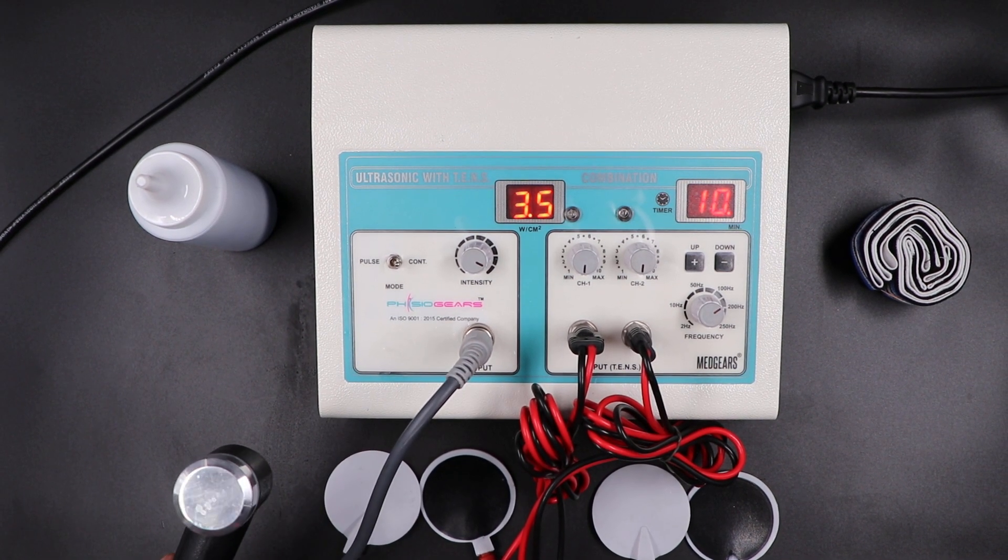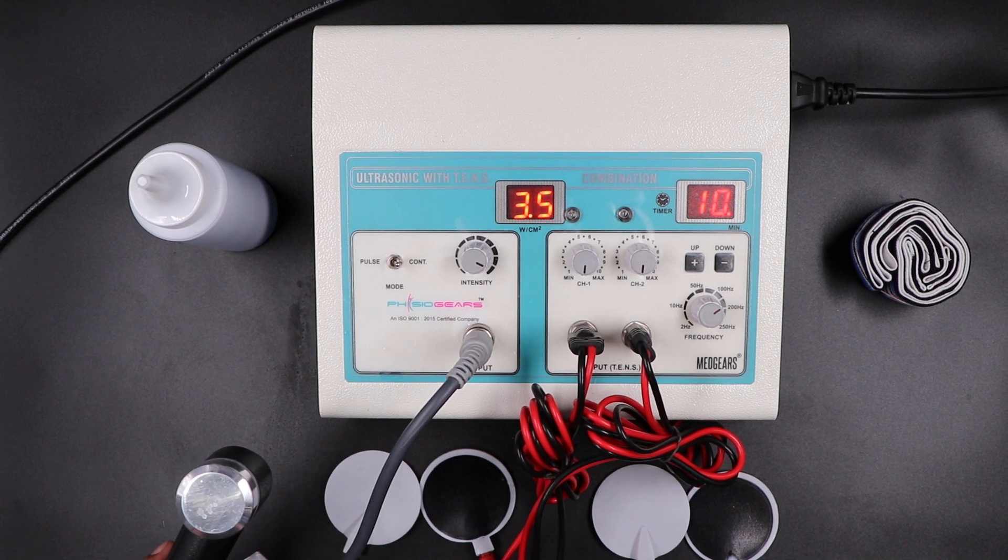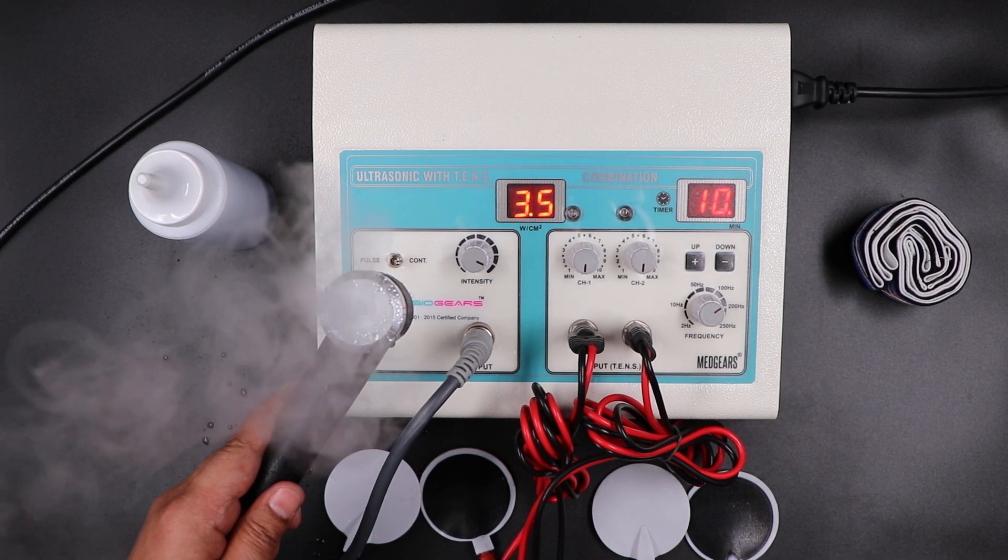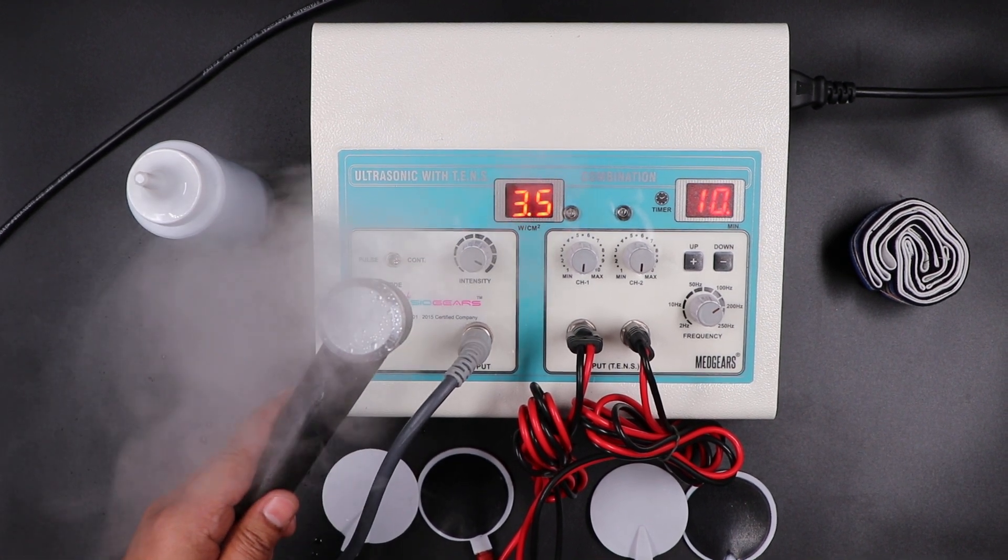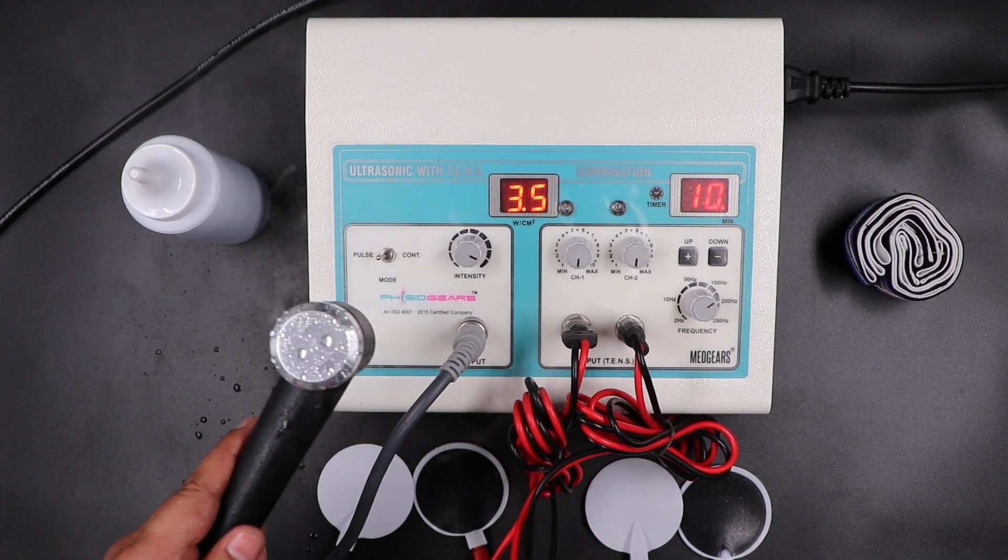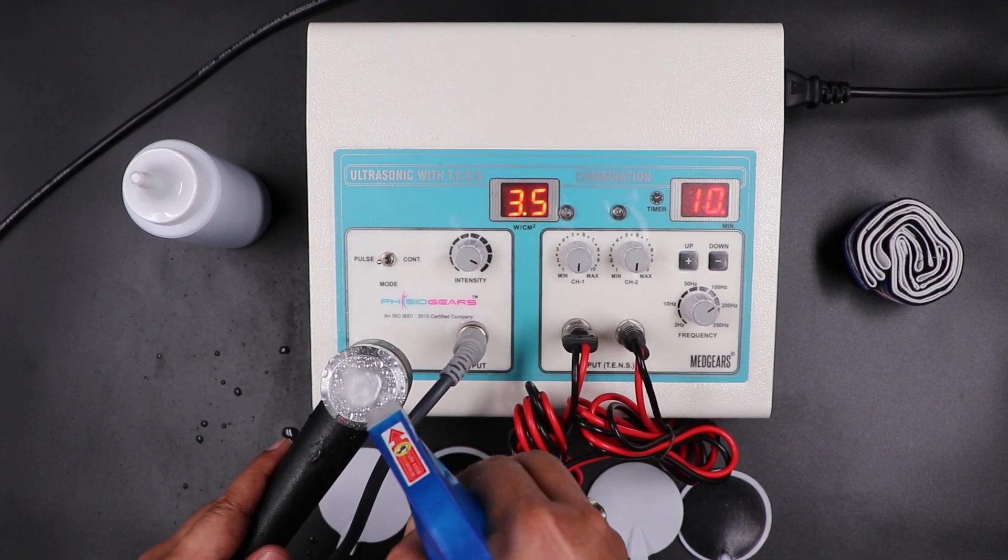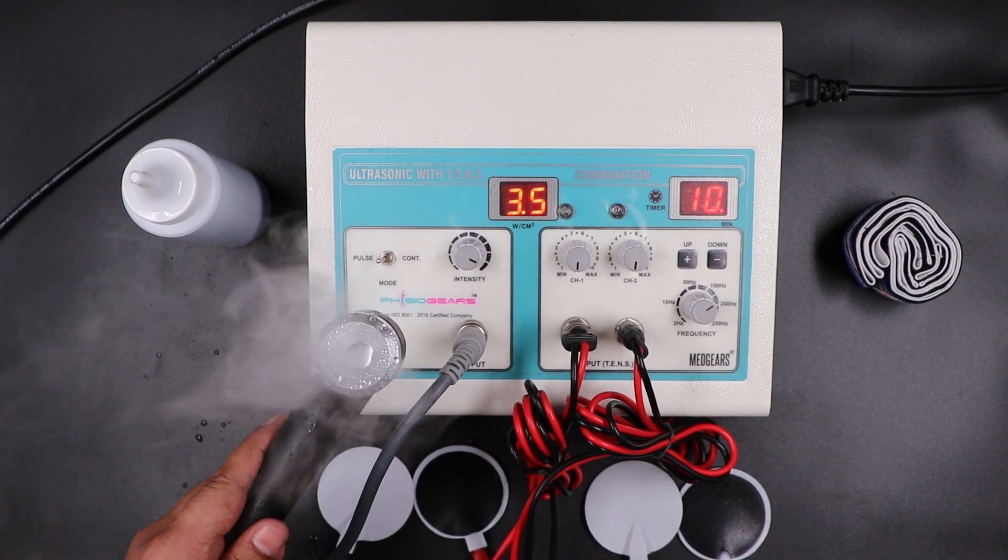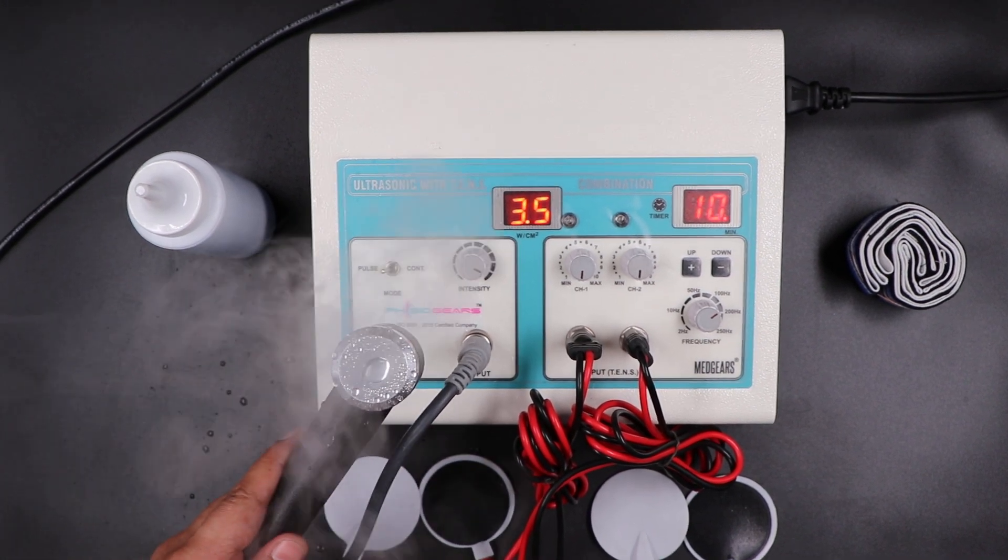Take some normal water and put it on the head surface of this probe, and you can see the sensation continuous. Now check it for pulse mode. Turn it to pulse mode and put some water on the surface of this head, and you can see the sensation breakage, the pulse.